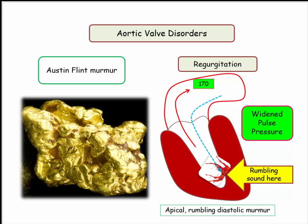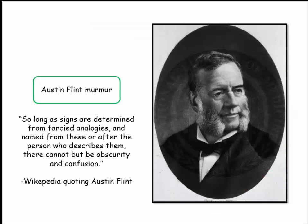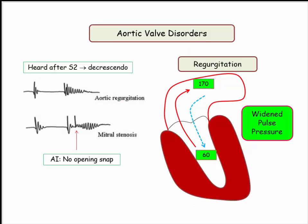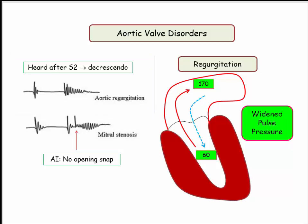Keep Austin-Flint in the deep recesses of your mind when considering aortic insufficiency. Dr. Flint himself wrote: 'So long as signs are determined from fancied analogies, a name from these, or after the person who describes them, there cannot but be obscurity and confusion.' Here at the end of the presentation is the phonographic recording of the aortic insufficiency murmur coming immediately after S2 in a decrescendo pattern. Mitral stenosis, with its opening snap, is shown for comparison.